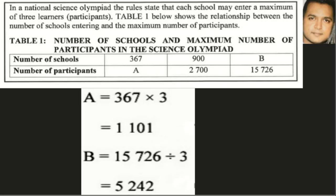Coming to B, we obviously have to work backwards. We take 15726 and divide it by three, and we arrive at 5242.